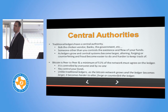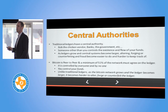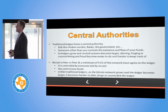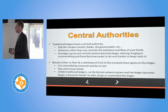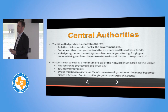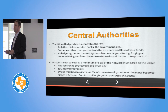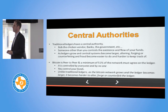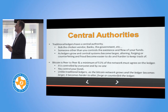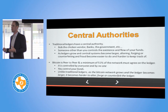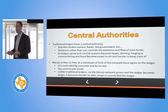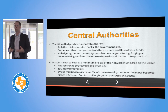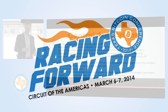Unlike the traditional ledgers, as the Bitcoin network grows and the ledger becomes more complex, it becomes harder to forge and harder to counterfeit. This is directly opposite of the current system, and this is what makes Bitcoin so strong — because as it grows it becomes stronger and stronger instead of weaker.